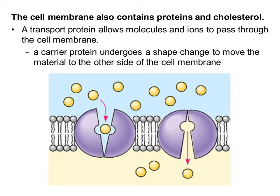Here we have another type of transport protein called a carrier protein. This one undergoes a shape change in order to move material from one side of the cell to the other. Remember from our biomolecules unit that any time we mentioned a protein, we always talked about how it had a specific shape. You can see the protein, shown in purple, has that specific shape to fit a particle into that little pocket. As soon as the particle gets loaded into that pocket, the protein changes its shape, and that particle is able to leave on the other side.